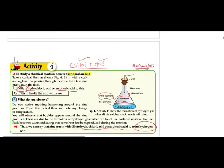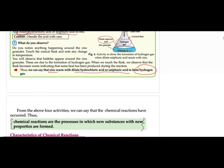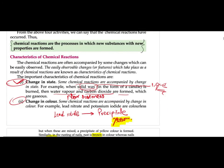Later we studied that it was carbon dioxide. In the fourth activity, we put zinc granules or zinc particles in dilute hydrochloric acid or sulfuric acid. We understood that when we mix them, hydrogen gets formed, which burns with a pop sound — the apparatus for that was also studied.